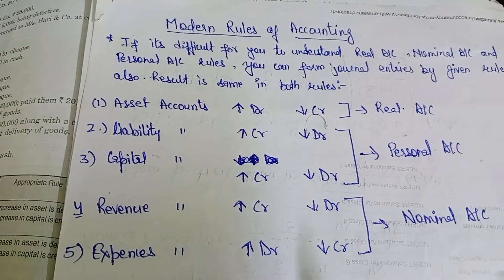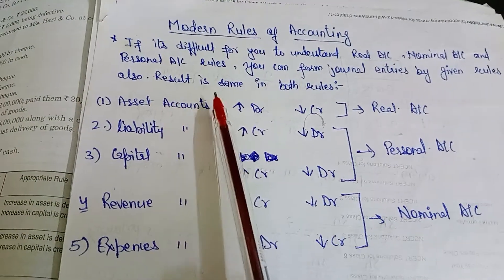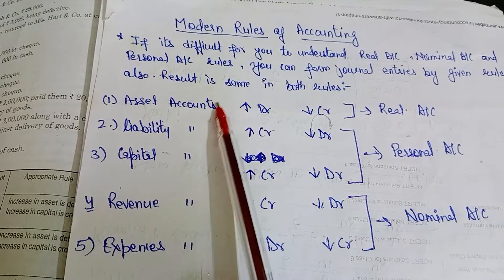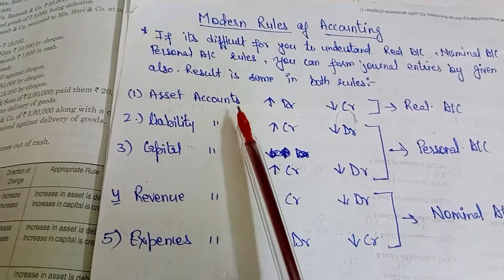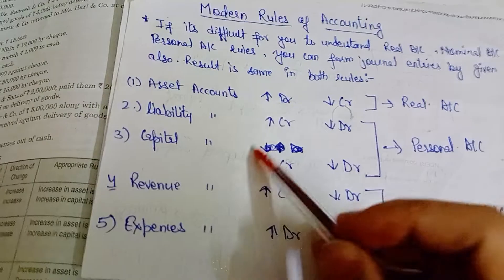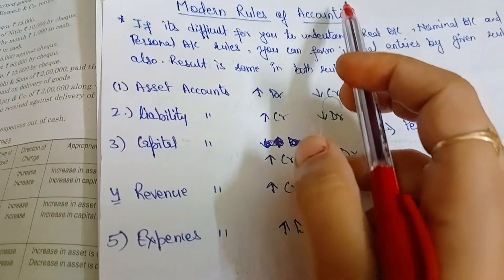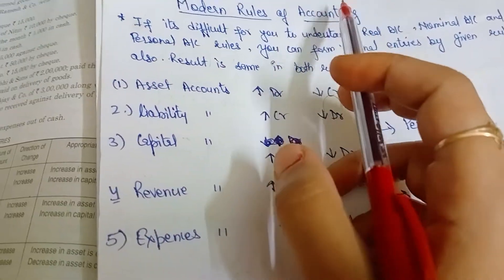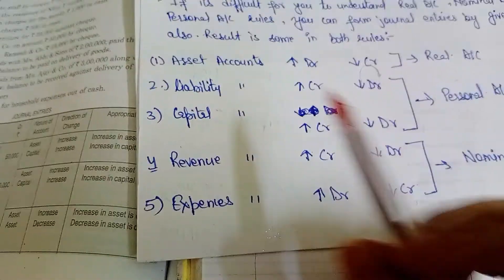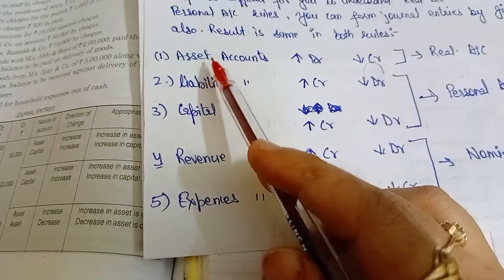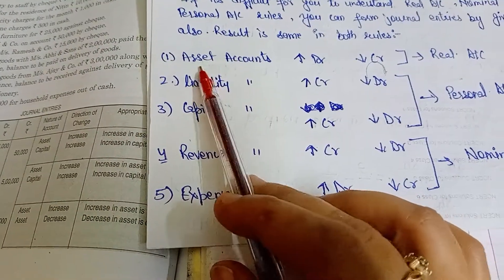We will see how to do journal entries by following modern rules of accounting. We should know first the rules on different accounts to do journal entries, because when students do not understand journal entries in class 11th, it is difficult for them to do accounting in class 12th.